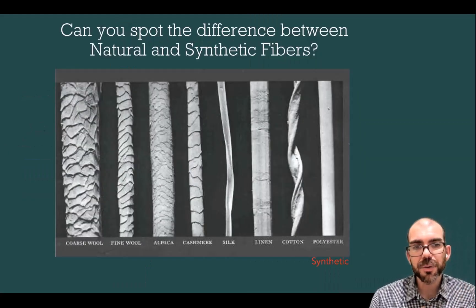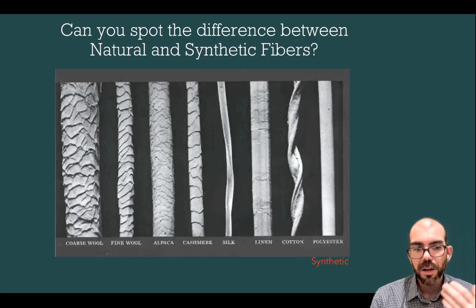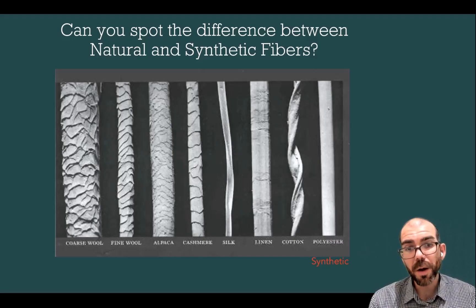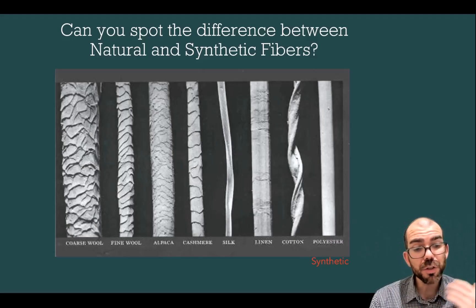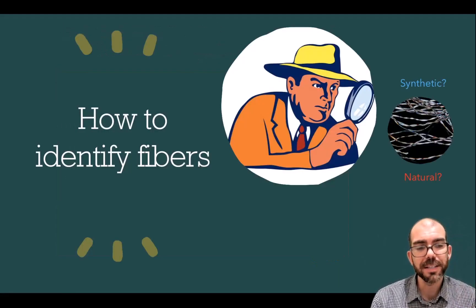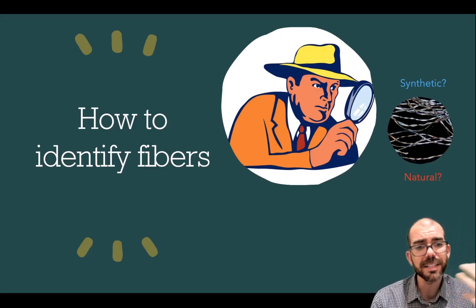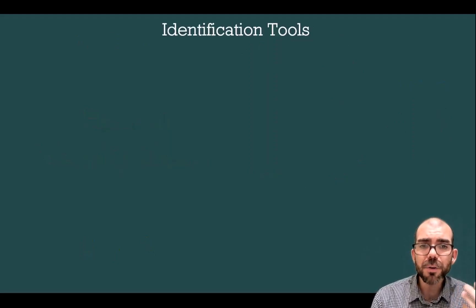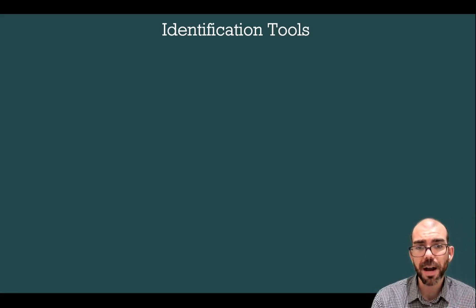Let's jump right into an analysis. Here is a microscope photo of different fibers. The synthetic fiber polyester is all the way on the right and the rest are natural. Could you spot the difference between the two and automatically determine which is synthetic and which is natural? There are many identification tools available to forensic scientists to determine what fiber has been discovered.